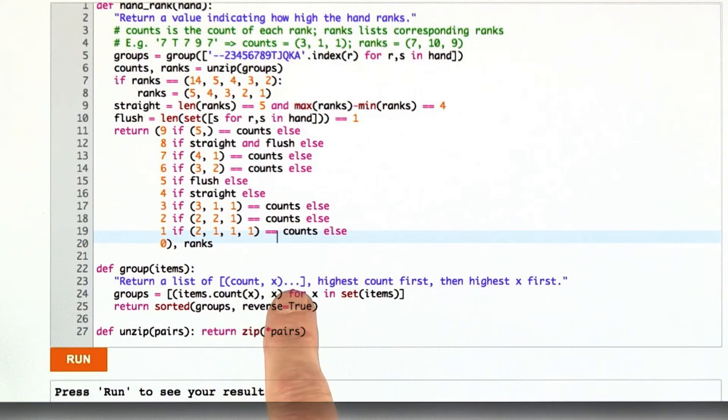Now this returns a list of pairs and we'd like to turn that into a pair of lists, and the unzip function does that. It's a little bit tricky. You have to look up the zip function and apply it to the destructured list of the pairs.